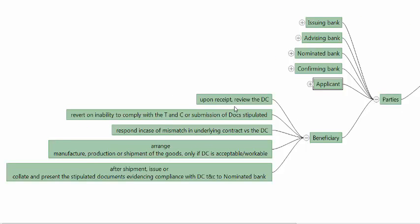The beneficiary is the party in whose favor the credit is issued. The issuing bank and the beneficiary are the two parties between whom there is a promise of payment. The beneficiary's first important duty is to review the DC and revert on any inability to comply with the terms and conditions. The beneficiary must review the documents called for, and if they cannot submit those documents or meet those terms and conditions, they must respond. In case of a mismatch between the underlying contract and the documentary credit, the beneficiary should only arrange for manufacture, procurement, or shipment of goods if they find the documentary credit acceptable and workable.